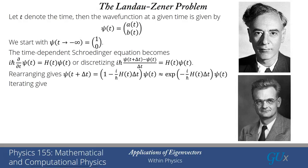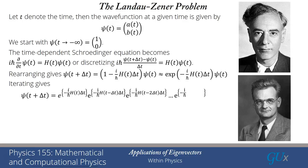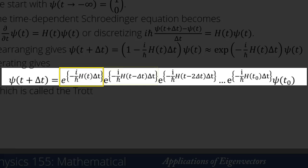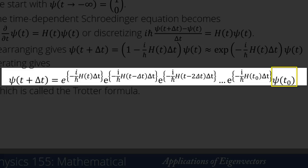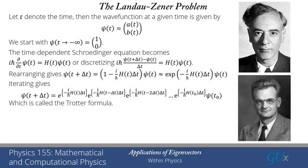We then do another step, and another step, and so on. After some number of steps, we will get a product: e^(−i/ħ · H(t)·Δt) times e^(−i/ħ · H(t−Δt)·Δt) times e^(−i/ħ · H(t−2Δt)·Δt) — all the way down to e^(−i/ħ · H(t₀)·Δt) — and then multiply that all by ψ(t₀). This is a very famous formula in quantum mechanics called the Trotter formula. Even though it's normally viewed as a rather advanced topic, you can see its derivation is actually pretty simple, using just the time-dependent Schrödinger equation.